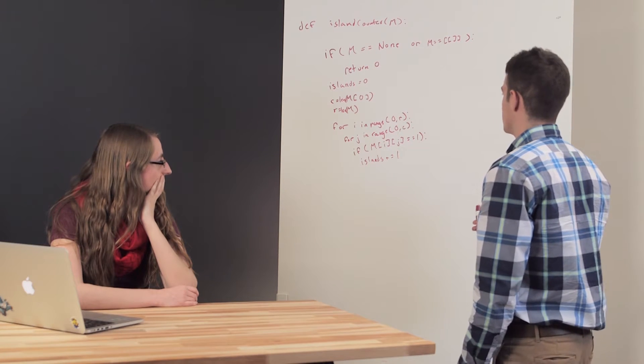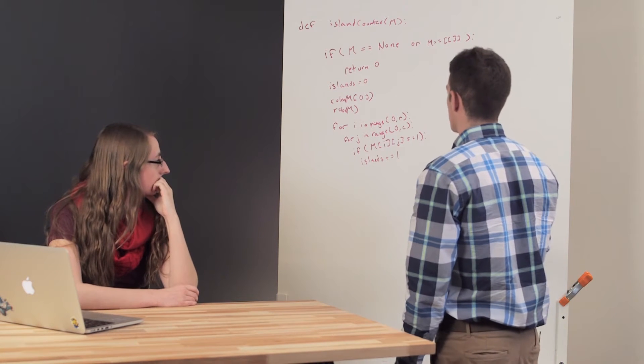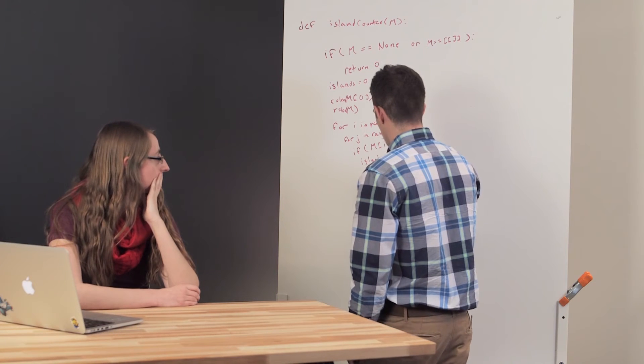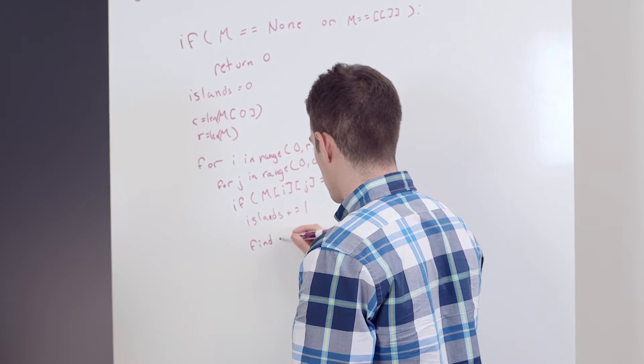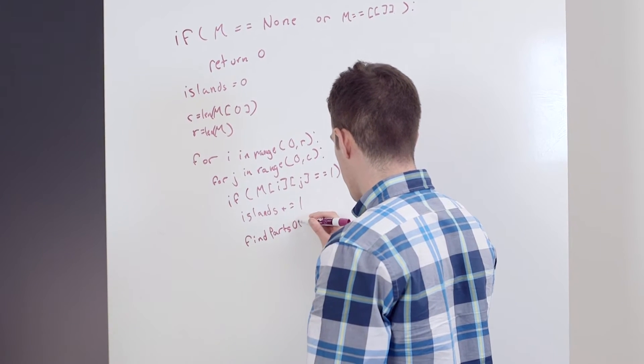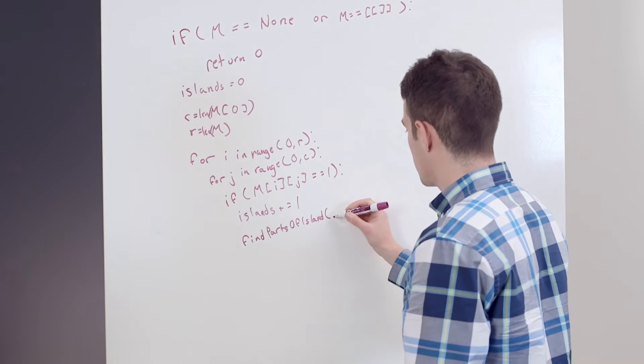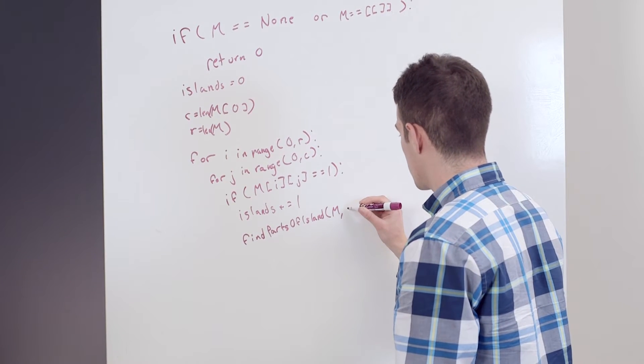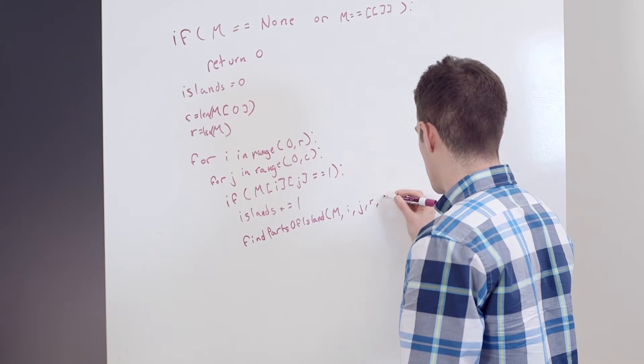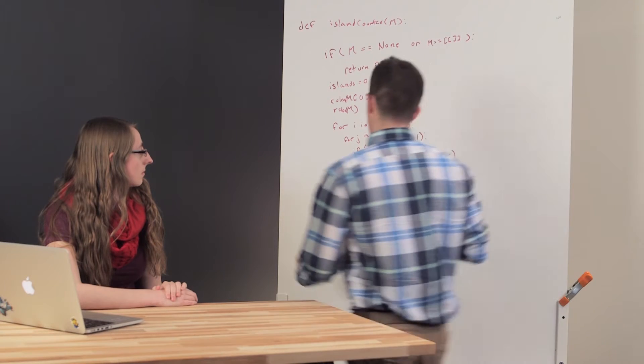So now what I need to do here is I need to do the breadth-first search that I was talking about before. So I'm just going to have a helper method to do that. Let's call it findPartsOfTheIsland. So I'm going to go ahead and define that down here.